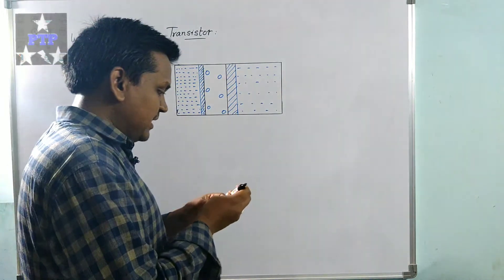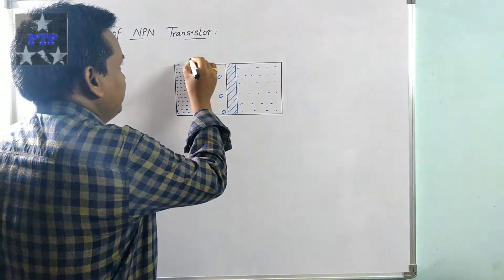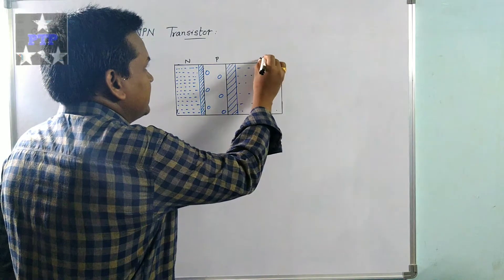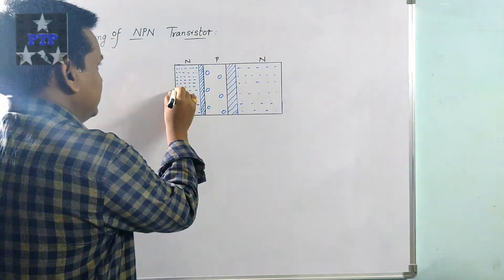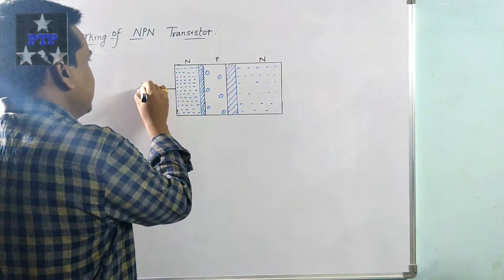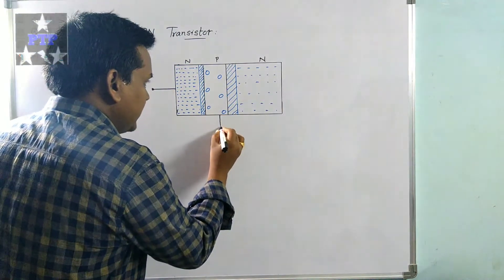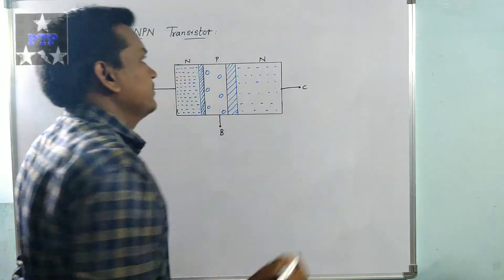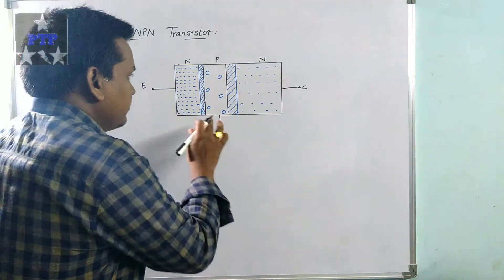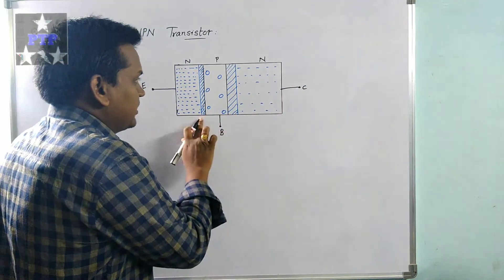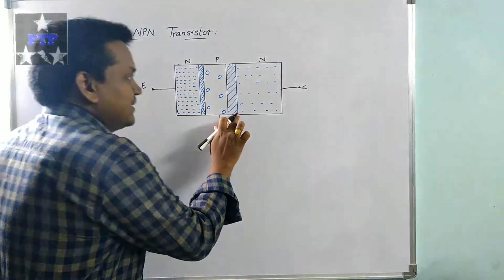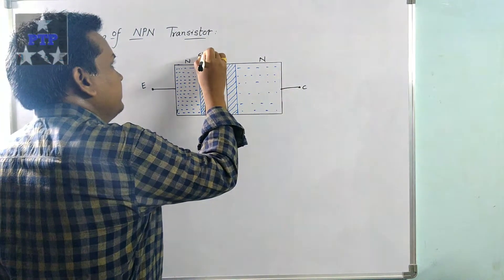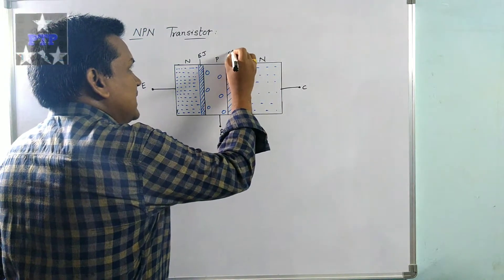If we name this transistor, this is the NPN transistor. The first N region is the emitter, the P region in the middle is the base, and the second N region is the collector. Observing the block diagram, we can see two junctions. The junction between emitter and base is called the emitter junction, and the junction between base and collector is called the collector junction.